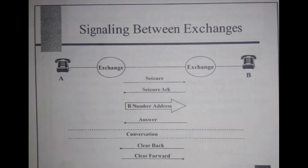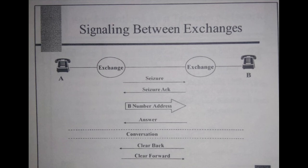Let's see how two exchanges communicate. Whenever a communication is going to be established between A and B, a signal called seize — which means capturing of the signaling between two exchanges — takes place from A to B, because A is dialing to B. The dialing-side exchange sends a seize signal to the receiving-side exchange, and in return the receiving exchange sends an acknowledgement back. So A dials the address, B responds, and the conversation takes place. Once B hangs up the phone, a clear-back signal goes from exchange B to exchange A, and then exchange A sends a clear-forward signal to exchange B. In this way the communication between two exchanges is established.